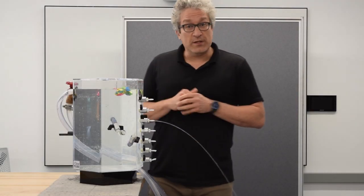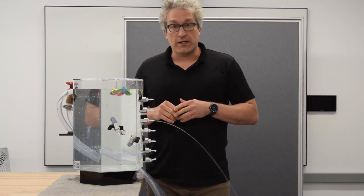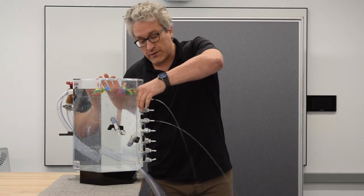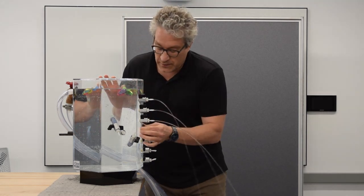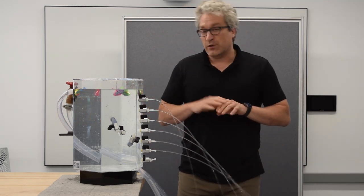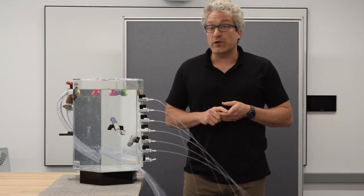This experiment doesn't perfectly match the theory, and the reason is that there's a certain amount of viscous losses in this flow. If I open up all these valves, I can see that these jets move at different speeds. I can trace this envelope, but it turns out this envelope isn't exactly 45 degrees.